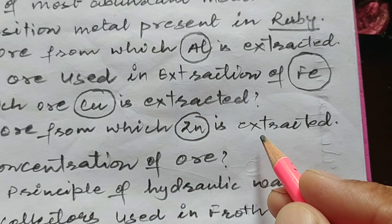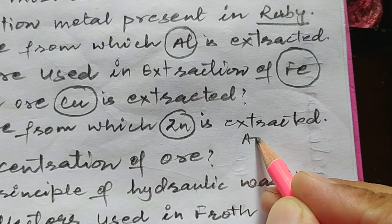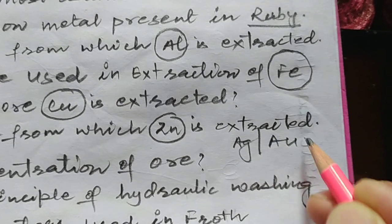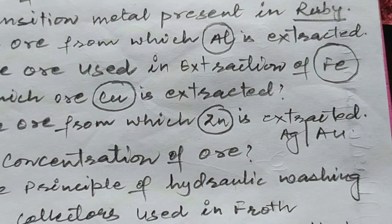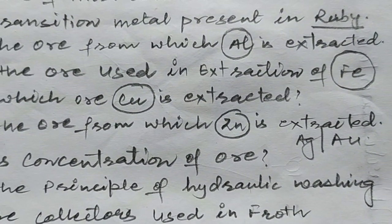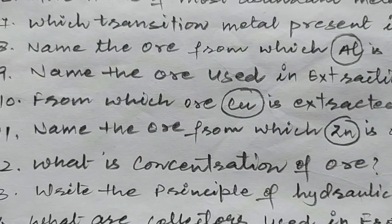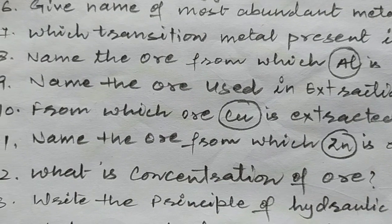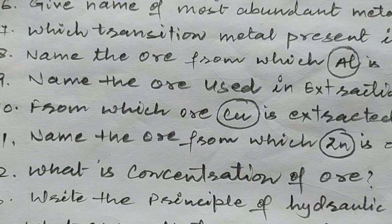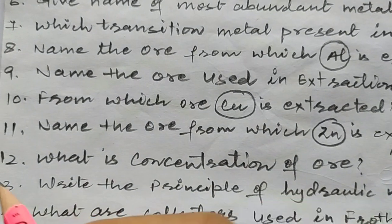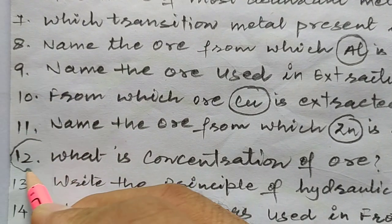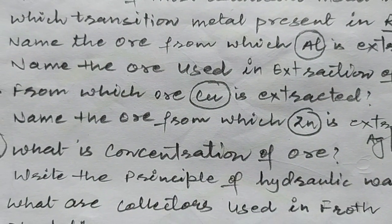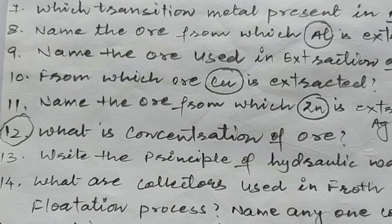These are the four most important elements. You should also know silver and gold. In the NCERT, check whether there are other metals listed. You can read all the formulae of the ore list. Question number 12 is a very important question: what is the concentration of ore? We are talking about concentration of ore and ore processing.